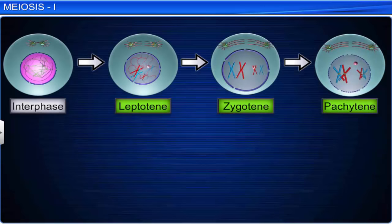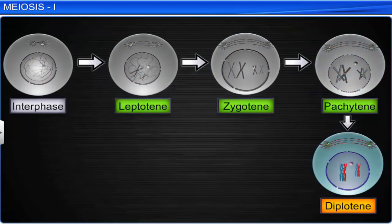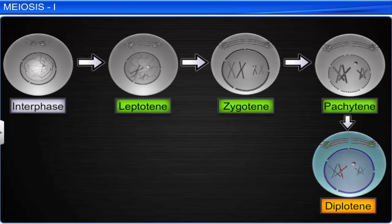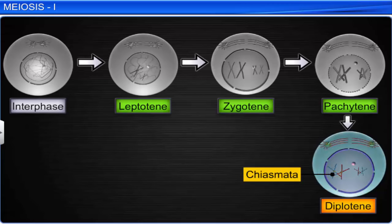The next stage in prophase 1 is the diplotene stage. The beginning of this stage is marked by the dissolution of the synaptonemal complex. Moreover, the recombined homologous chromosomes of the bivalent display a tendency to separate from each other, except at the crossover sites. The X-shaped part on the homologous chromosomes that holds the two together once they have crossed over is called a chiasmata. The diplotene stage can last for several months or years in oocytes of certain vertebrates.